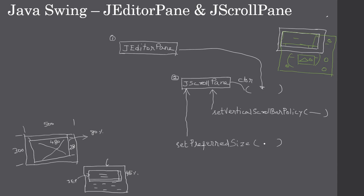With setPreferredSize we specify the width and height of the scrolling area. Once you specify the scrolling area, only that portion of the JEditorPane is shown — you are setting the scrolling area size using setPreferredSize. Inside the JScrollPane we are displaying the JEditorPane, and we construct a new Dimension specifying width and height — for example, 480 by 280 — even though the JFrame size is 500 by 300.